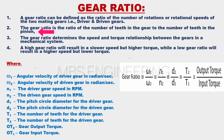The gear ratio is the ratio of the number of teeth in the gear to the number of teeth in the pinion. The gear ratio determines the speed and torque relationship between the gears in a mechanical system. A high gear ratio will result in a slower speed but higher torque, while a low gear ratio will result in a higher speed but lower torque.